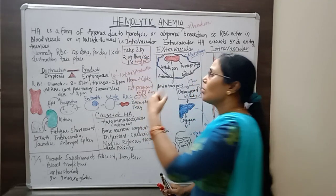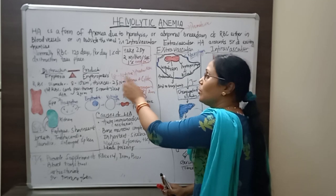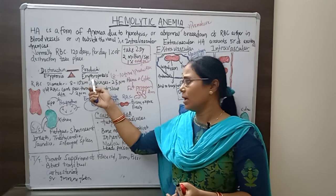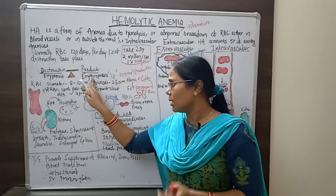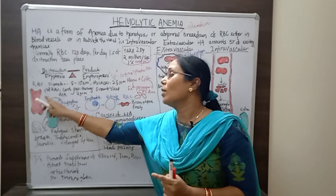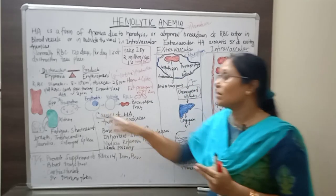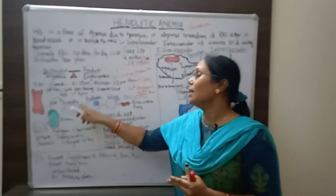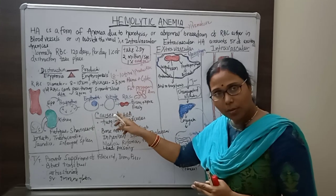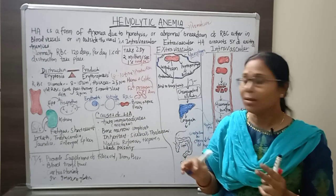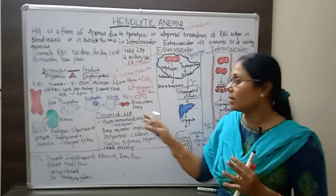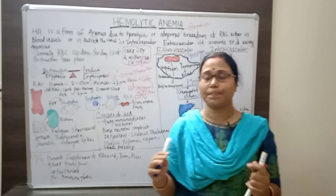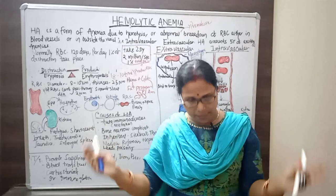Our body has the capacity to produce eight to ten times more RBCs than normal when needed. The erythropoiesis process occurs in the bone marrow, where proerythroblasts — precursor cells for RBCs — develop into erythroblasts, then reticulocytes, and finally mature RBCs. This formation process takes approximately two days.